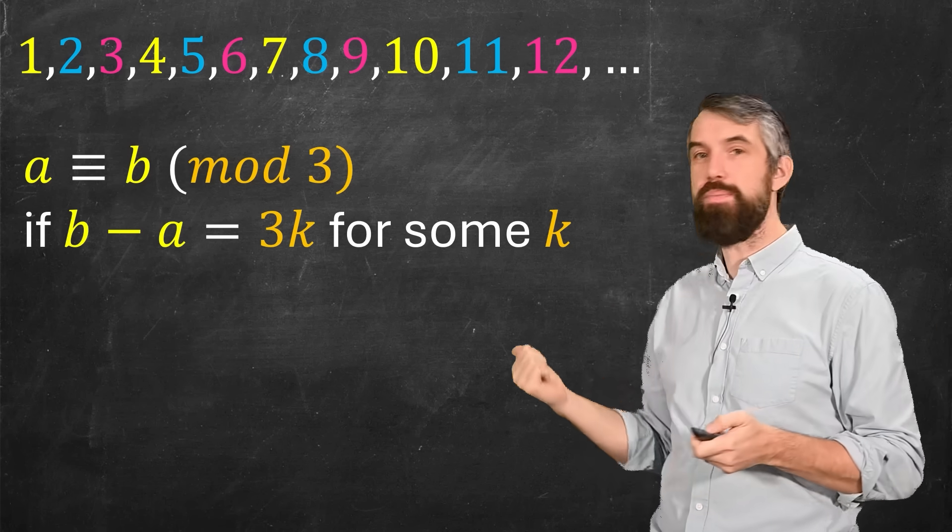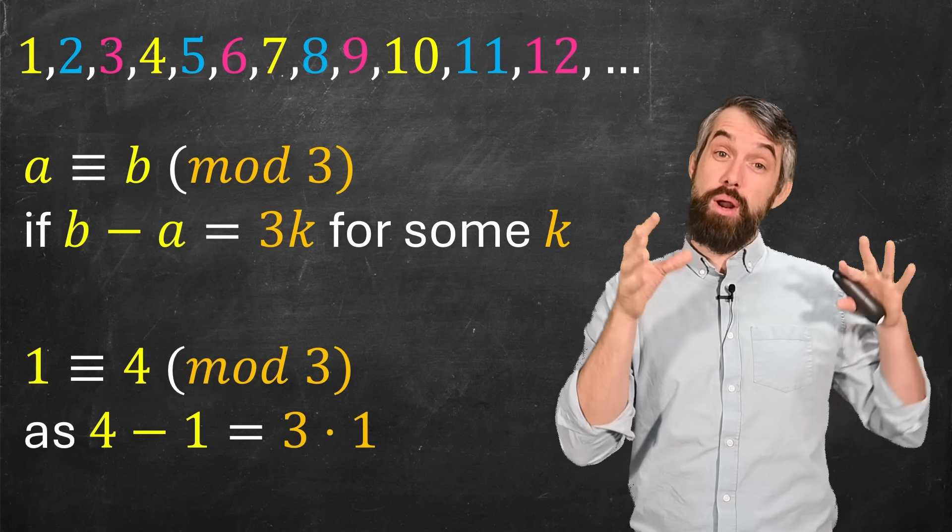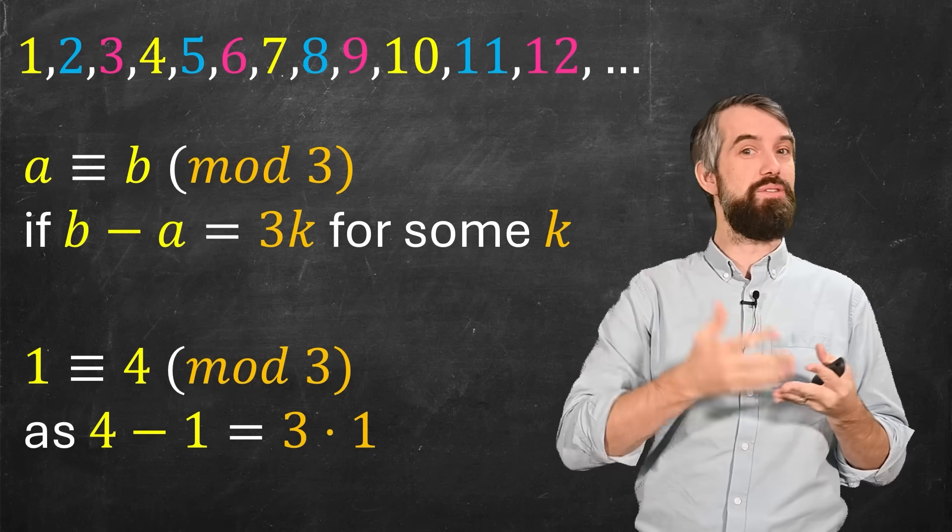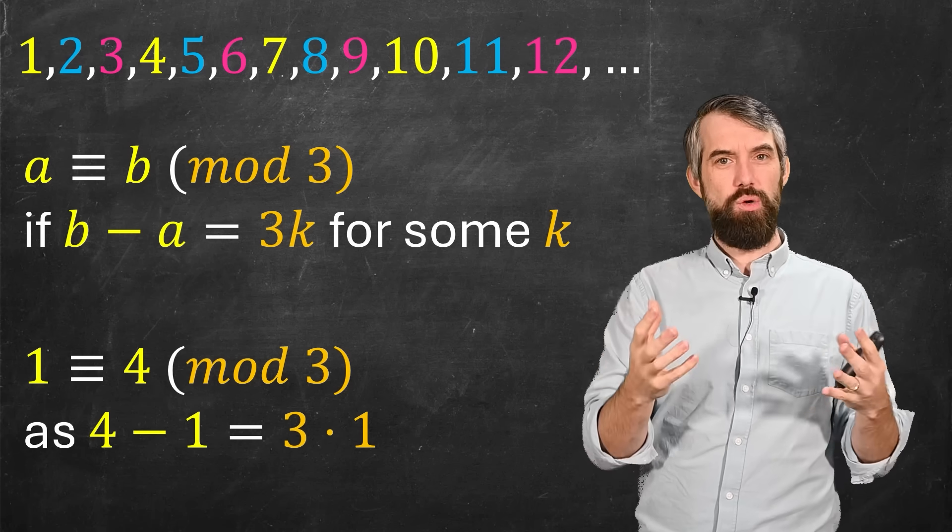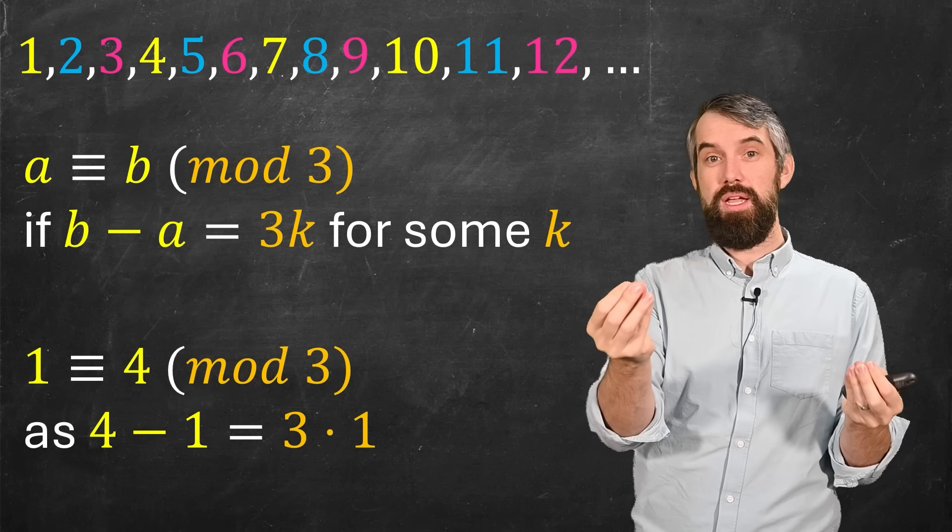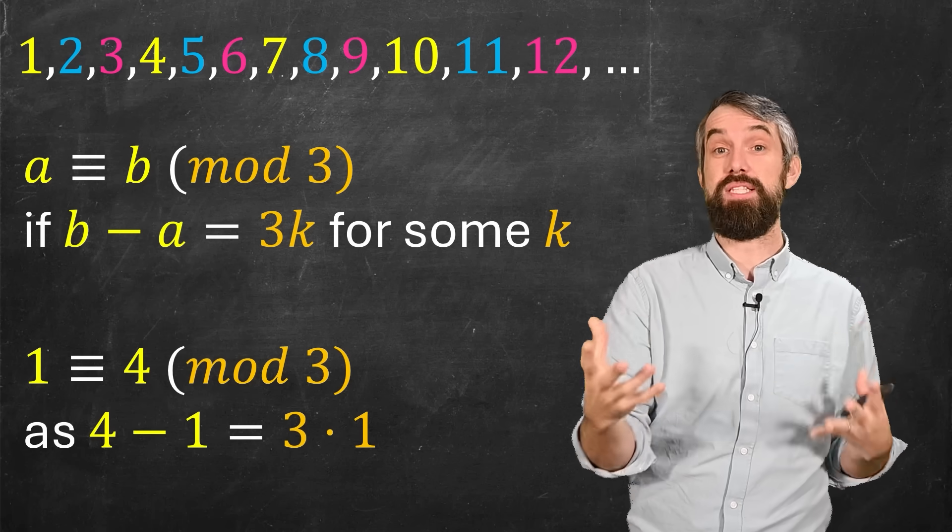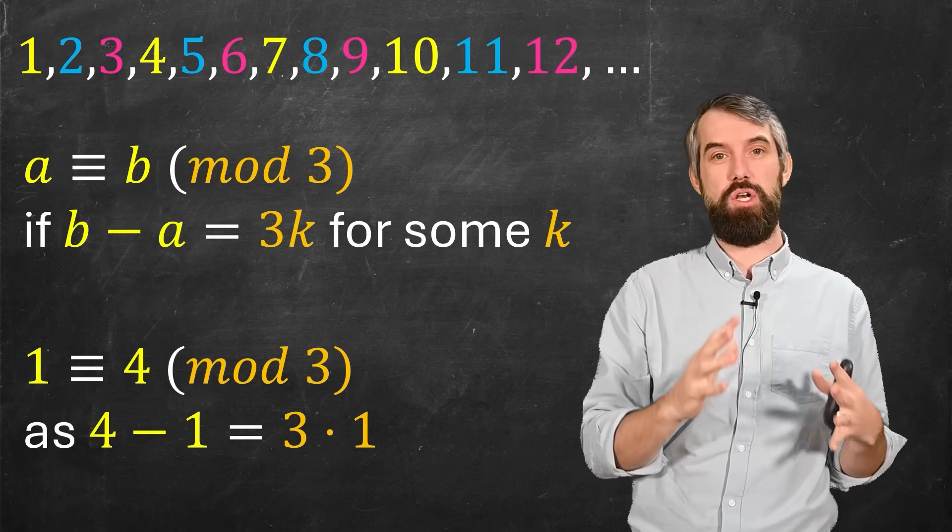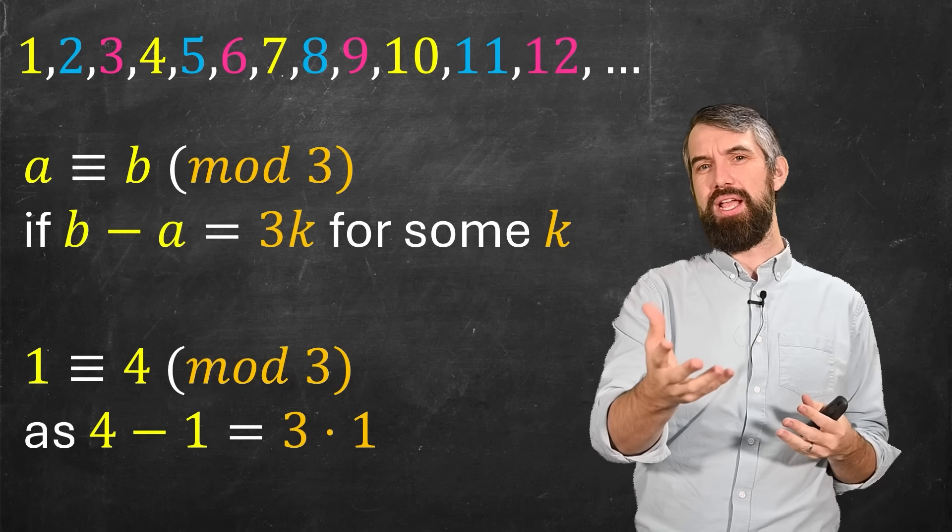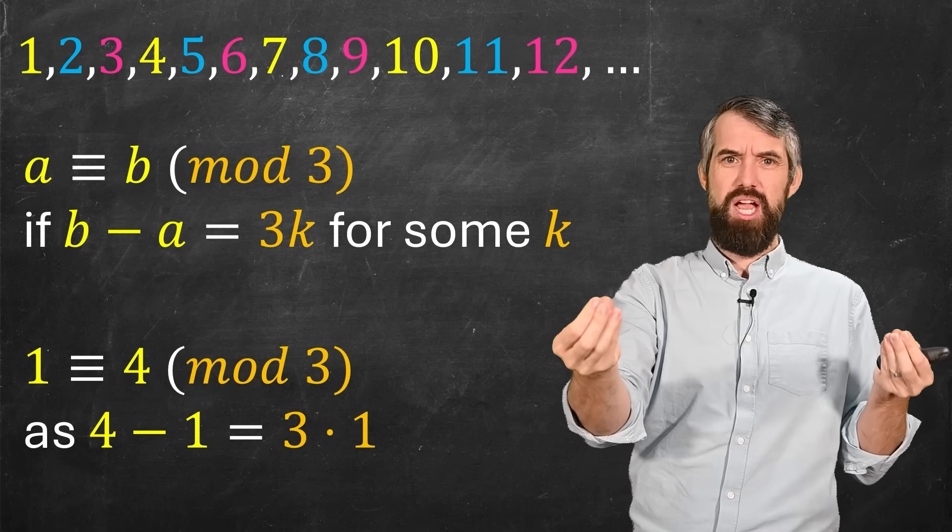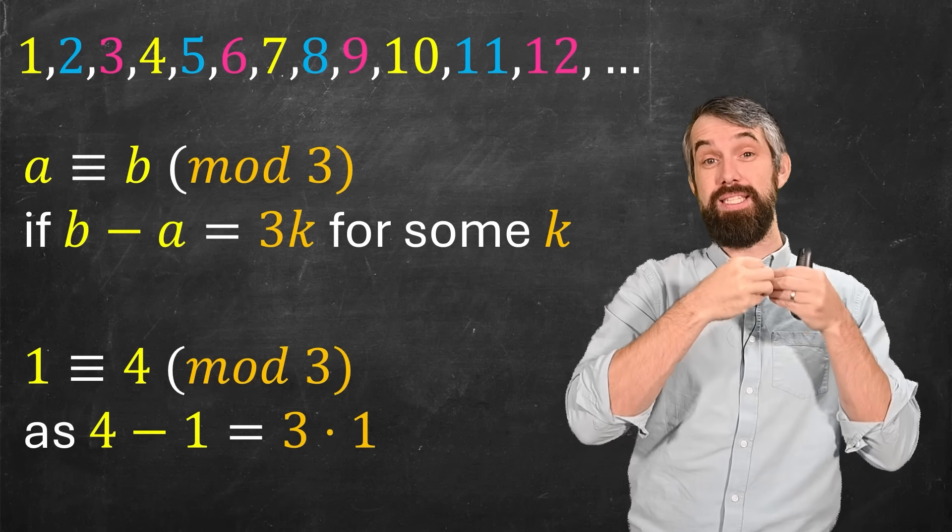So for example, if I look at 1 and 4, they're equivalent in modular arithmetic with mod 3 because their difference is just 3 times 1. While 1 and 4 visually look different, we're gluing them together as being the same thing in this particular structure. In the same way that in a clock, 13 o'clock and 1 o'clock, even though they're different numbers, we're gluing them together and thinking of them as the same idea.